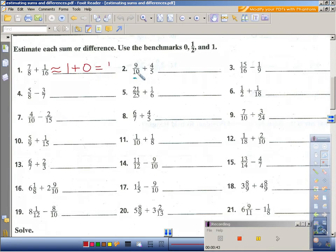Number two, nine-tenths, numerator really close to the denominator, so we benchmark nine-tenths at one whole, plus four-fifths, numerator really close to the denominator again, one whole. We might make that two.